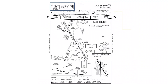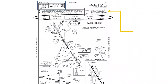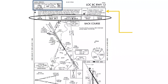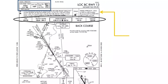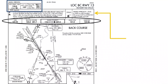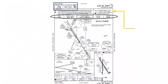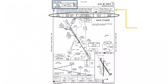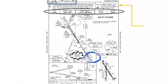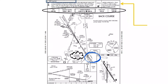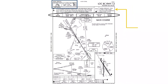The missed approach procedure calls for the pilot to climb to 2,400 feet while staying on the southeast localizer course on a heading of 133 to the Lotka waypoint and initiate the holding pattern procedure as shown. The Lotka waypoint is 6.9 miles from the Salem localizer.